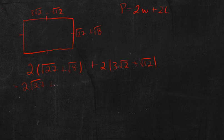Then 2 times 8 is 2 root 8. And then we multiply 2 times 3 root 2 is 6 root 2. And then 2 times root 12 is 2 root 12.